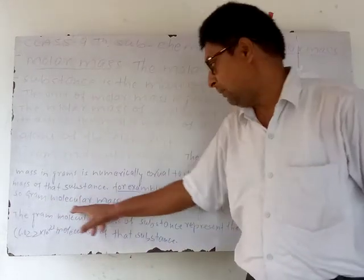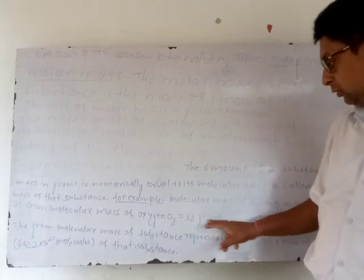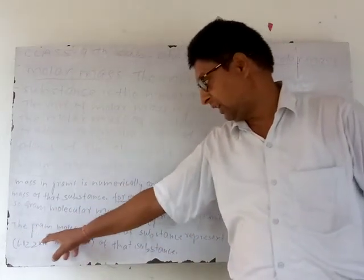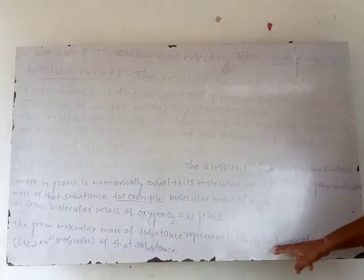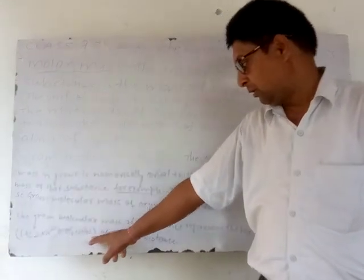So the gram molecular mass of oxygen O2 is 32 grams. The gram molecular mass of a substance represents the mass of 1 mole of molecules, which is 6.022 × 10^23 molecules of the substance.